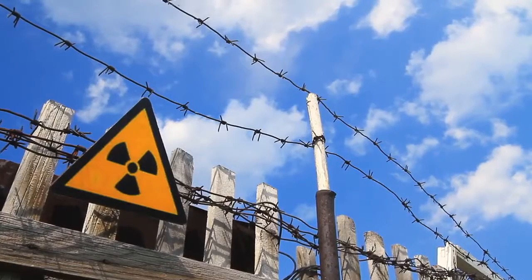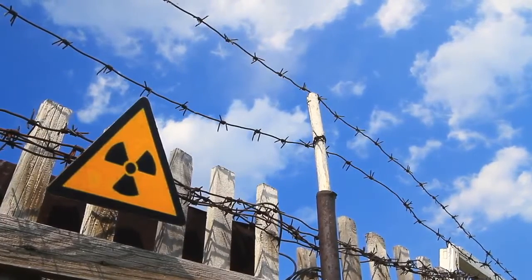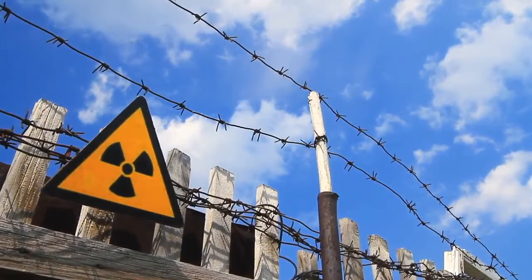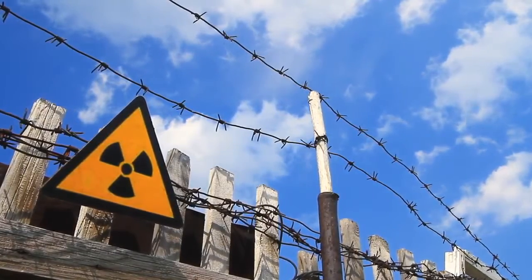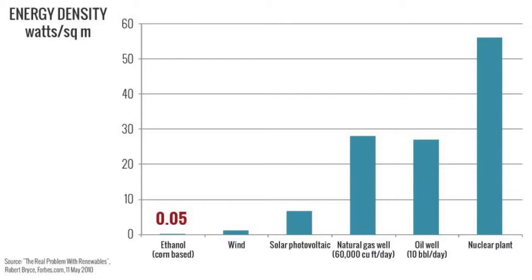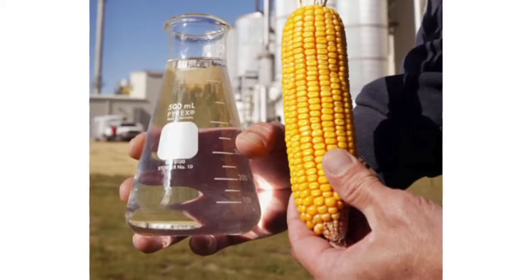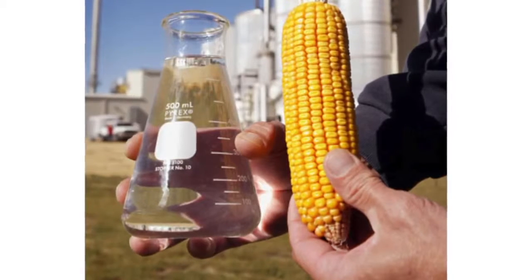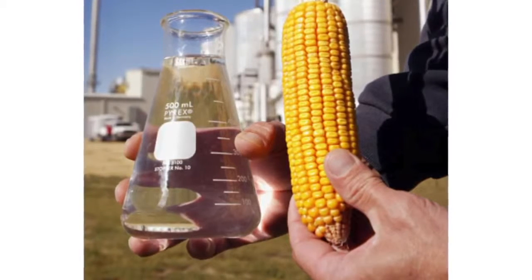However, costs and fears about nuclear disasters — like the Chernobyl, Ukraine nuclear accident of 1986 that left cities and towns uninhabitable — present significant barriers. Ethanol, which in the U.S. is usually created from corn, is at the low end of the scale with only 0.05 watts per square meter. With that low return on energy investment, we're probably better off simply eating the corn rather than filling our gas tanks with it.